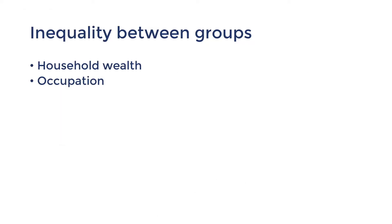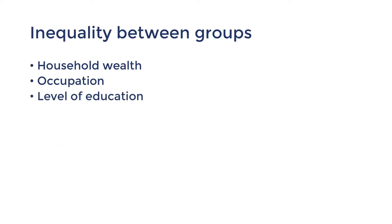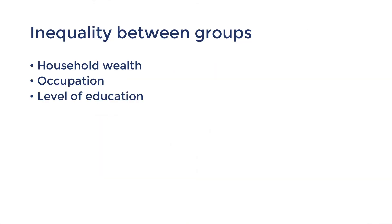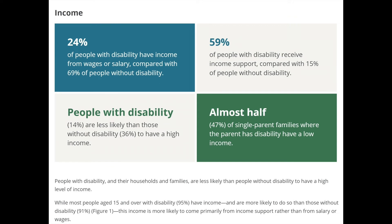The next differentiator is the level of education. Those with higher qualifications are often associated with higher skills and productivity, giving them access to higher paying occupations. Whether a worker has a physical or mental disability could also impact their ability to earn a higher income, as it could limit their productivity or access to training and education.